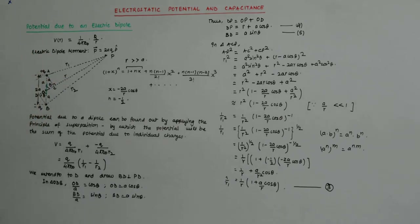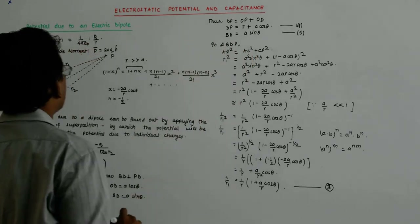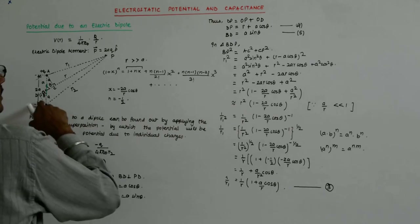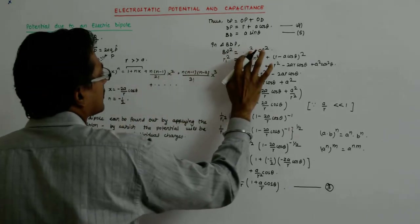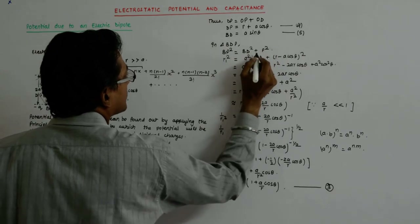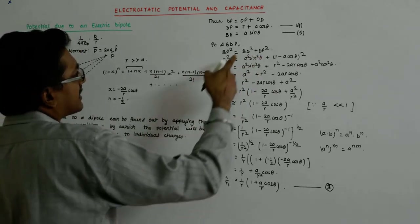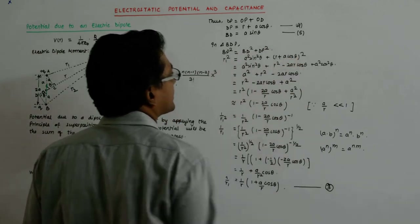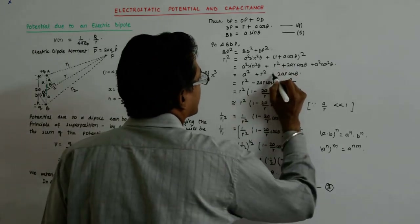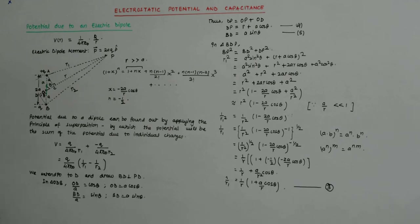In triangle BDP, we have BP squared equal to BD squared plus DP squared. Now BD is a sin theta, so BD squared is a squared sin squared theta. And DP is r plus a cos theta — note it is plus here, not minus as before — so DP squared is r plus a cos theta squared. This gives us r2 squared.